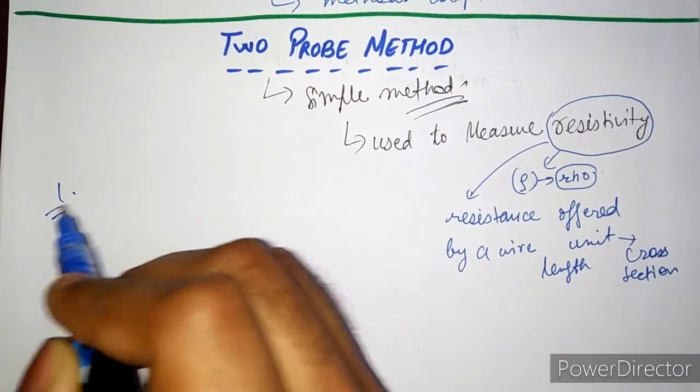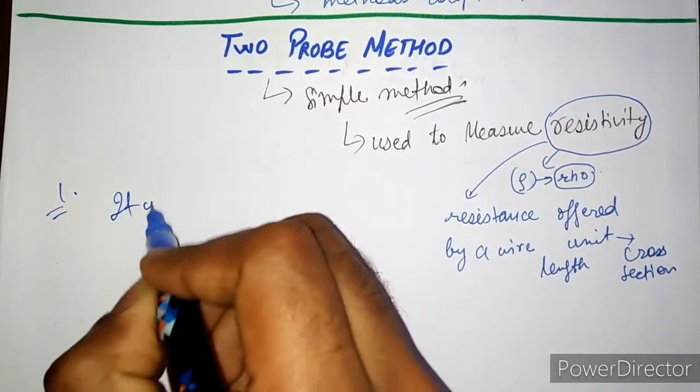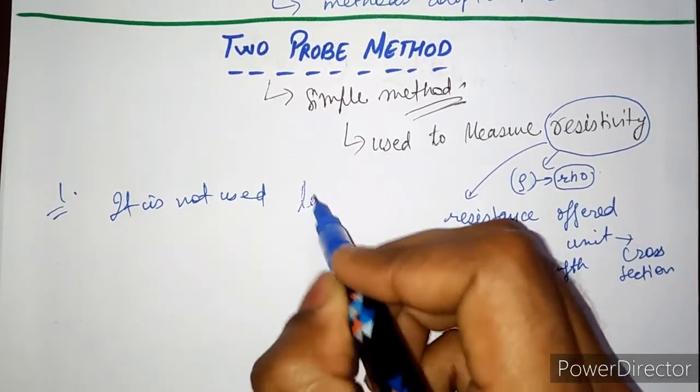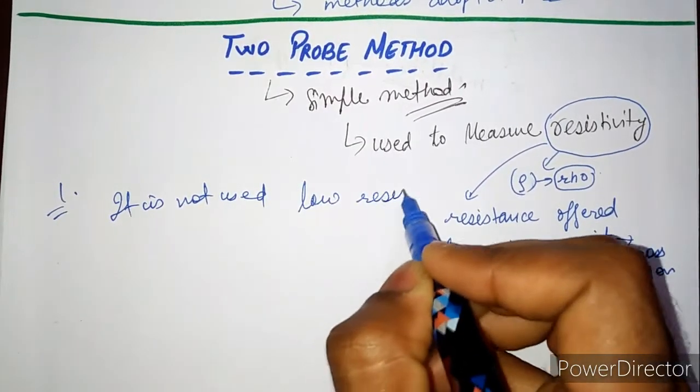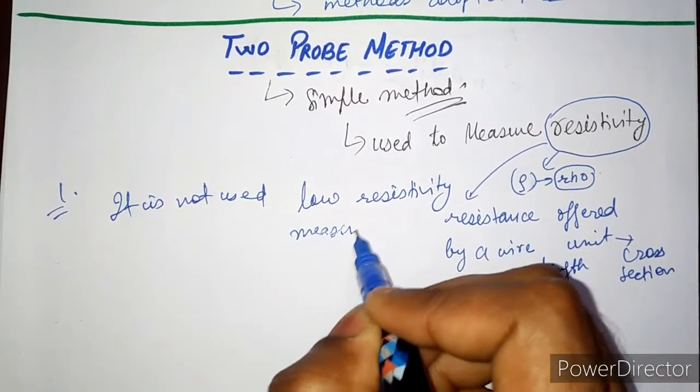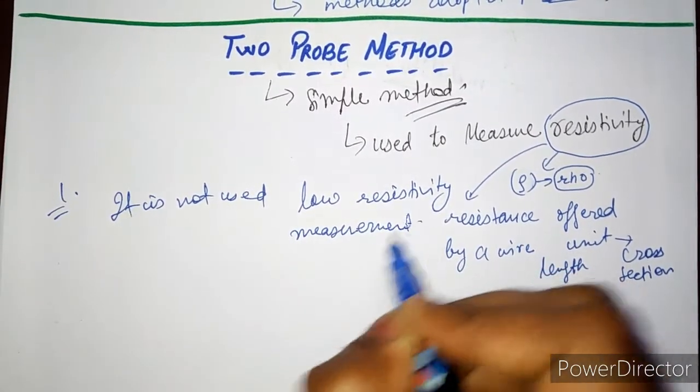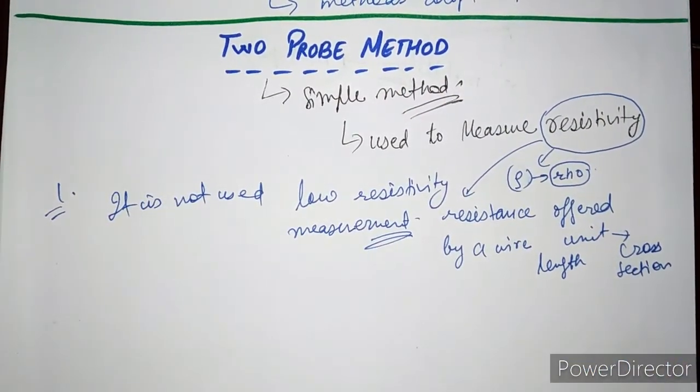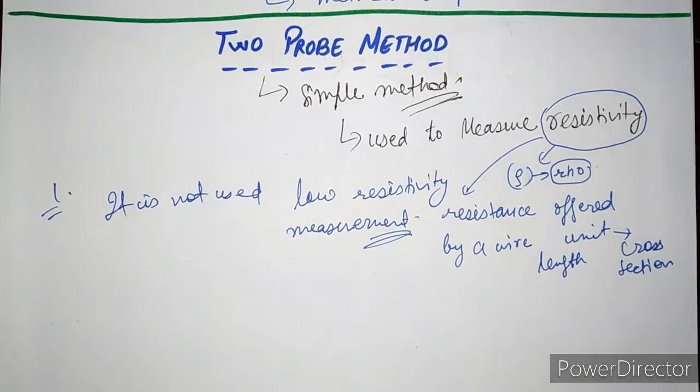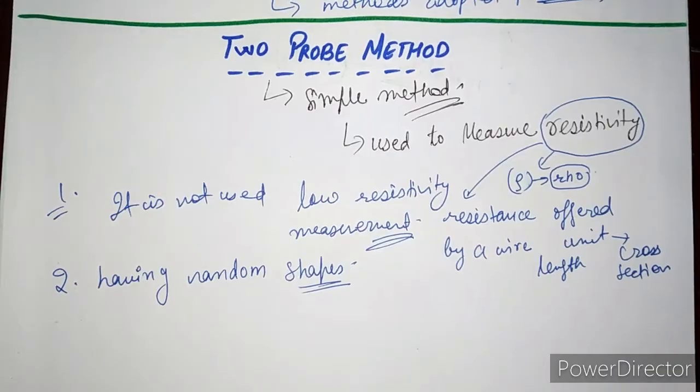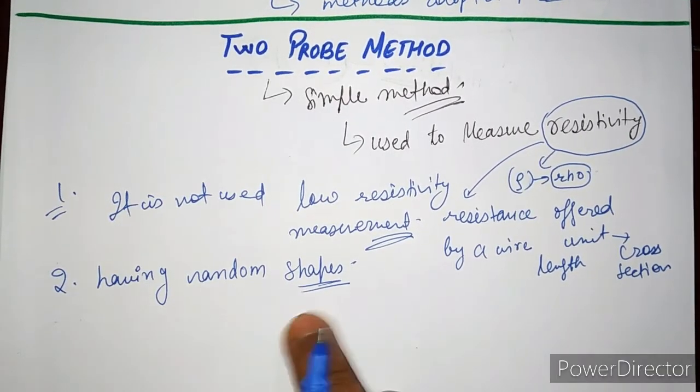So the first disadvantage is it is not used for low resistivity measurement. Low resistivity measurement means that the material which has low resistivity, this method is not applicable on that type of material whose resistivity is very low.